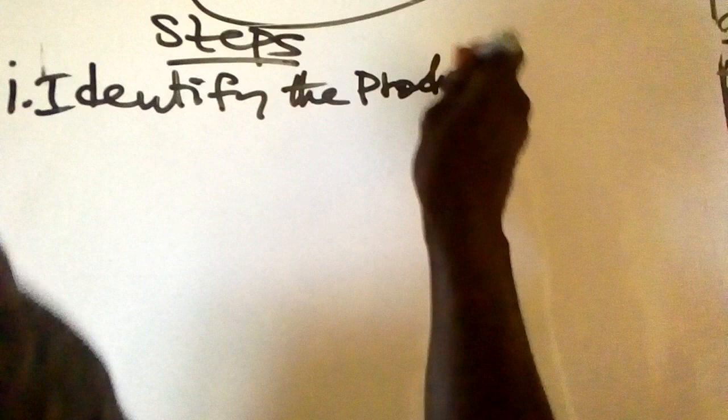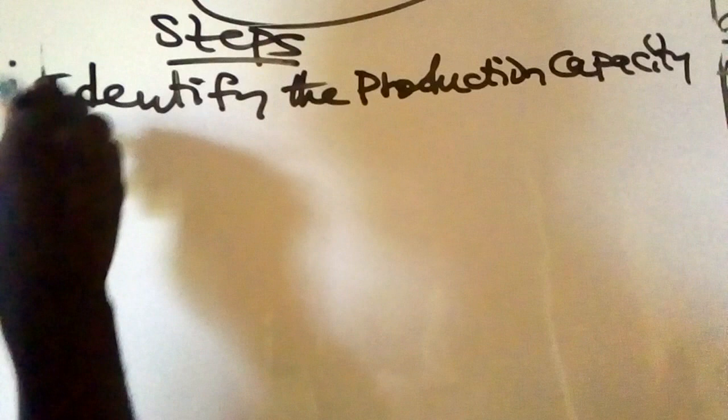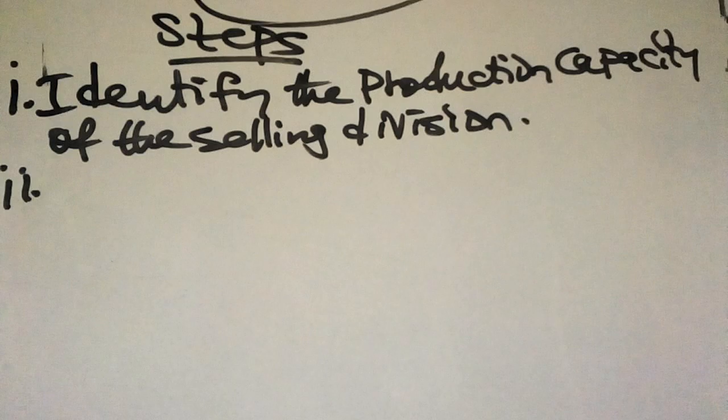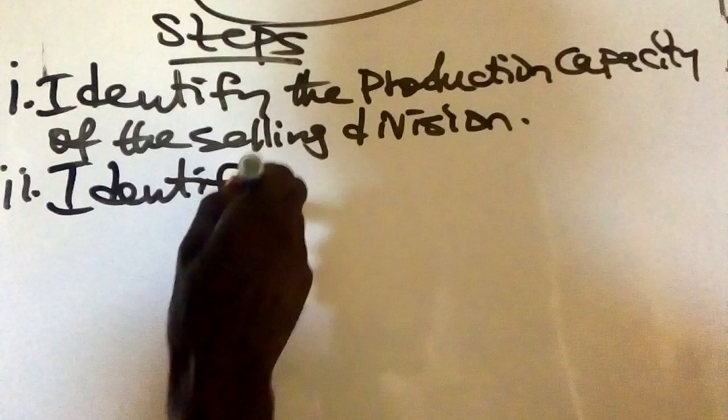Steps for solving problems on transfer price. Step one: identify the maximum production capacity of the selling division. Step two: identify the external demand of the selling division — that is, the demand by external customers.